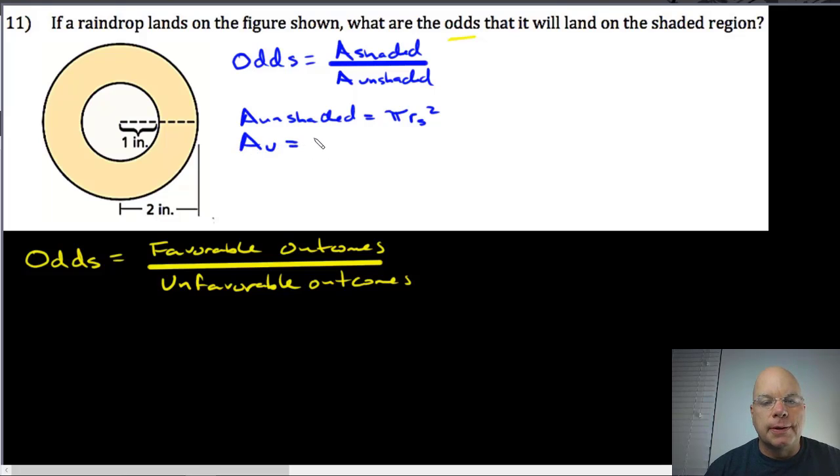And I'll just start to use u for unshaded. So that's equal to π multiplied by the radius of the small circle is just one. So one squared, which is just π multiplied by one or π.